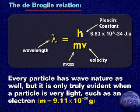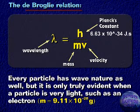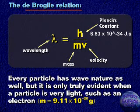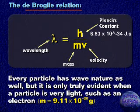Therefore, lambda equals H divided by mv, where lambda is the wavelength, H is Planck's constant — 6.63 times 10 to the power of minus 34 joules per second — m is the mass of the particle, and V is the velocity of the particle.